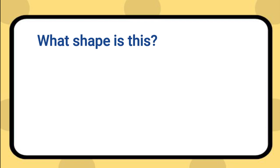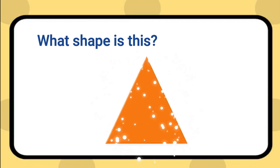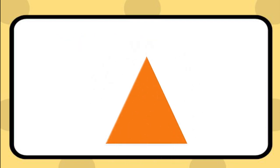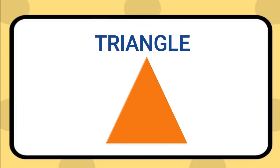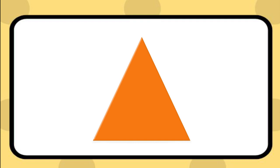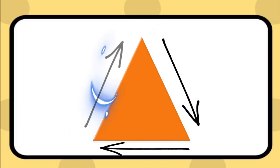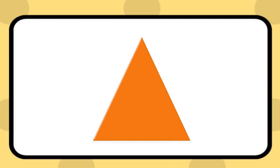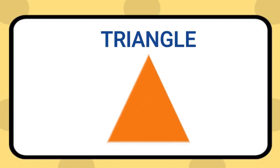What shape is this? This is a triangle. A triangle has three sides: one, two, three. Triangle.